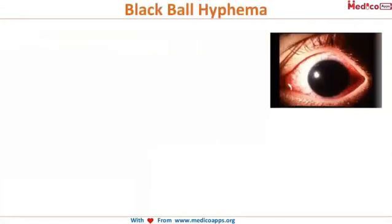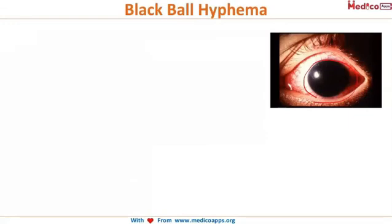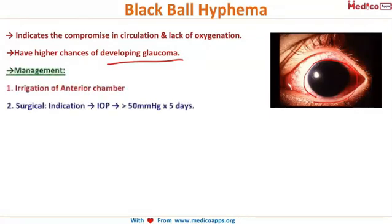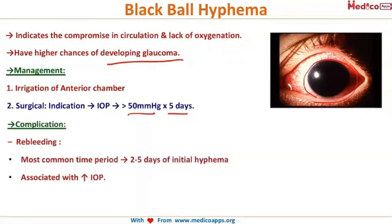The black ball or 8-ball hyphema is when the blood is completely black in color — it indicates a compromise in circulation and lack of oxygen, and these patients have a higher chance of developing glaucoma. Management involves irrigating the anterior chamber and observing. Surgical management is indicated if intraocular pressure is greater than 50 mmHg for more than five days. The complication is re-bleeding, most commonly occurring within two to five days of the initial hyphema, also associated with increased intraocular pressure.